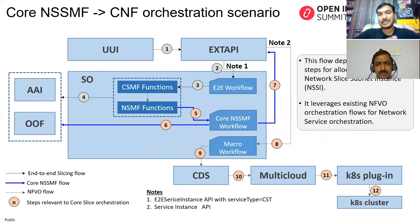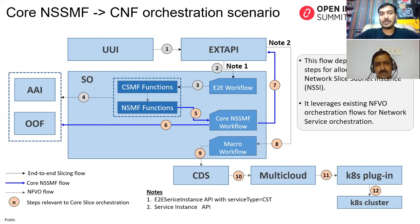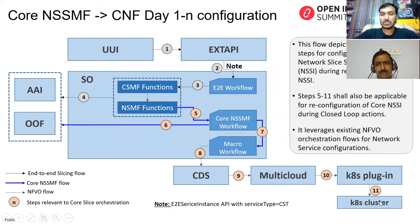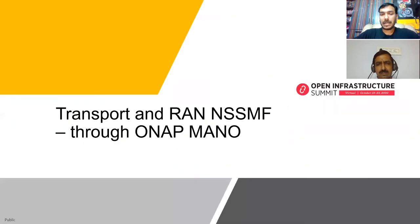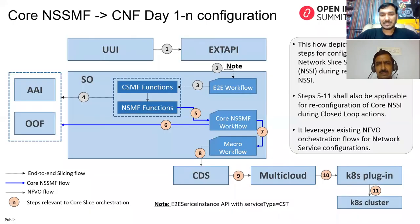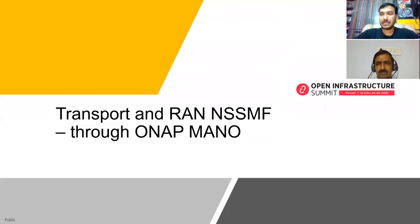The same flow transforms to CNF orchestration for slicing: CSMF and NSMF functions are handled by SO. The core NSSMF represents the scenario one brainstormed earlier. A workflow is published by CDS and multicloud and finally goes to the Kubernetes cluster. Slides will be shared for further detail. I'll now hand over to Swaminathan to cover RAN NSSMF, transport, and the roadmap.